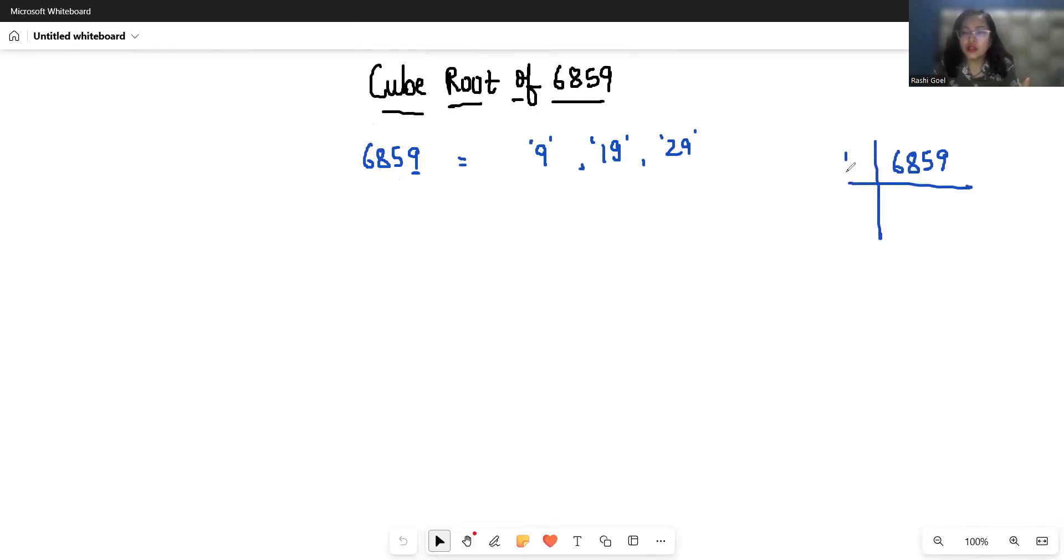If you use prime factorization with 19, when we divide 6859 by 19, we get 361, and 361 is the square of 19. So yes, that's how you can check. 6859 can be written as 19 times 19 times 19.